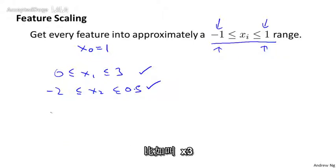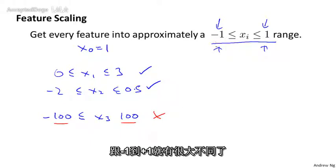It's only if you have a different feature, say x3, that ranges from -100 to +100, then this is a very different range of values than -1 and +1. So this might be a less well-scaled feature. And similarly, if your features take on a very small range of values...